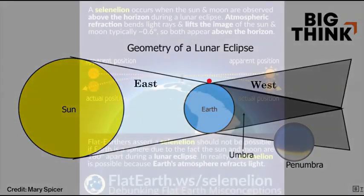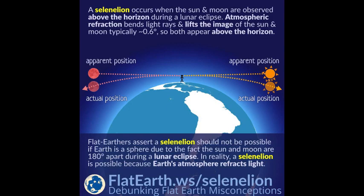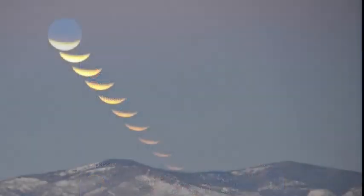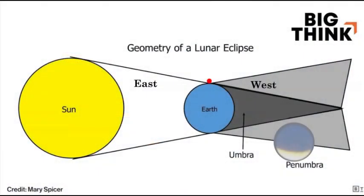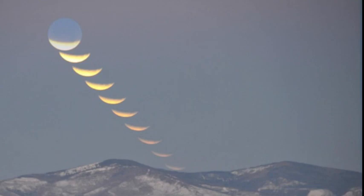The number one explanation I've heard globe earthers provide when trying to explain selenelions is that refraction is causing both the Sun and the Moon to be visible. That is some pretty extreme refraction — high above the mountains even — and that Moon is not showing any signs of distortion. When we put the Moon down here on the globe model, in order for the shadow to get bigger, the Moon would have to be moving into the shadow, not away from it, which would require the Moon to be moving the wrong way. And this is a moonset, not a moonrise.